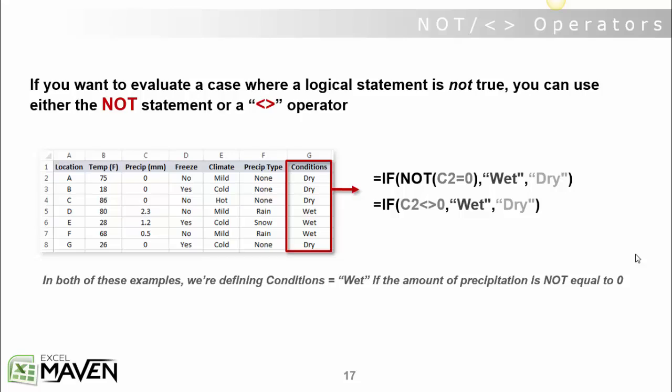Here's an example where we want to redefine the conditions field based on the precipitation column in column C. One way to do it would be to use the NOT statement and say if NOT(C2=0), which in other words is saying if C2 is not equal to 0, then value of true is wet, value of false is dry.